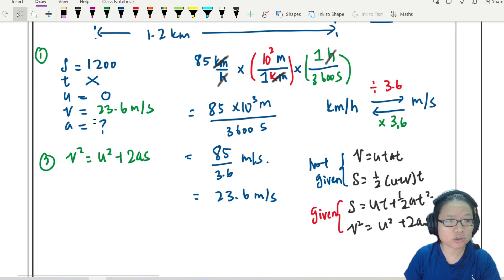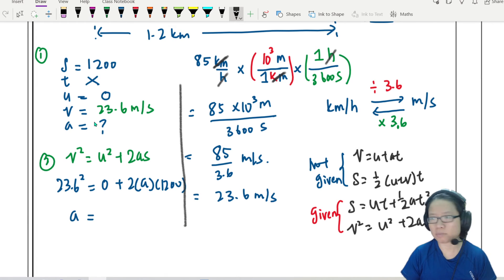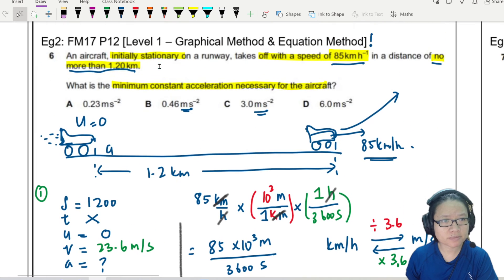So, V squared is U squared plus 2AS. And I'm going to substitute the equation in. So, this will be 23.6 squared is equal to 0 plus 2A times 1200. So, from here, I can find my A. Draw a line here to separate them. 23.6 squared divided by 2 divided by 1200. I got 0.232 meter per second squared. Let's check on answers. So, 0.23, the answer is A.